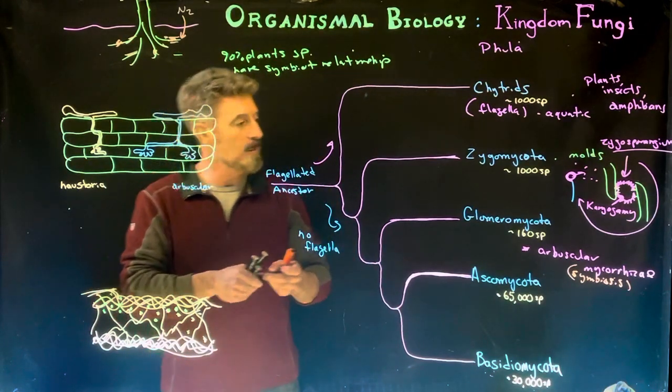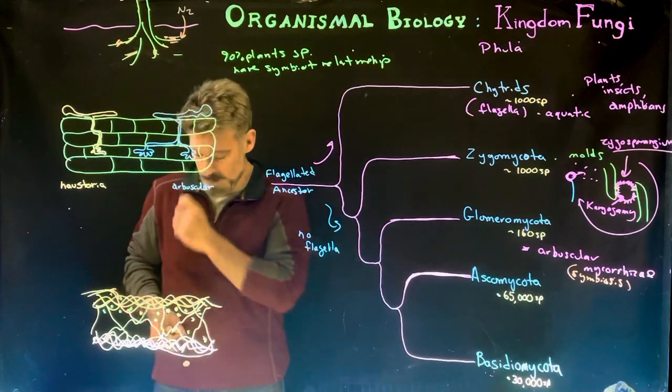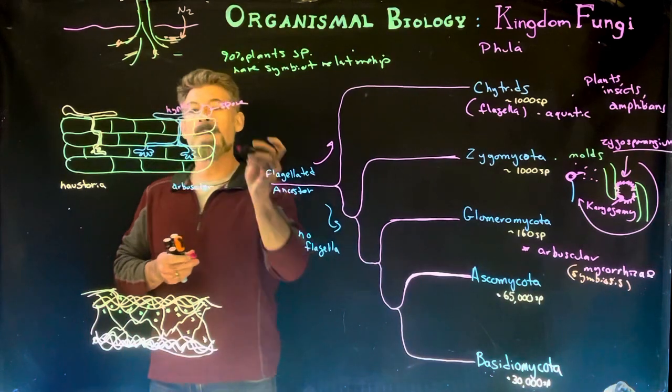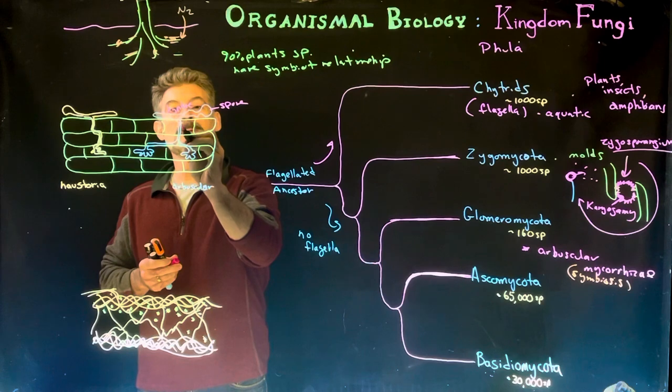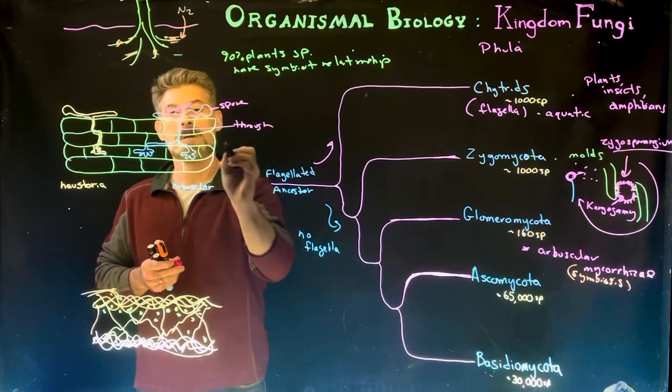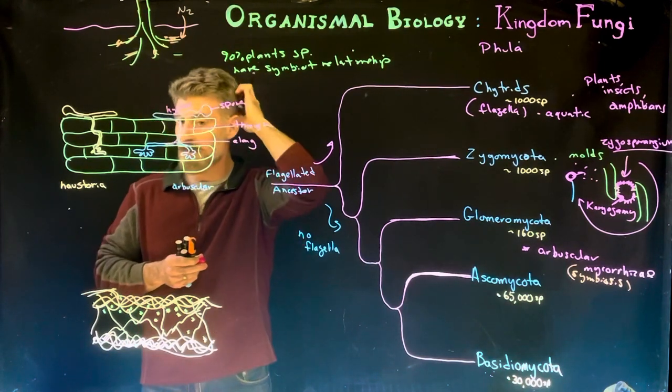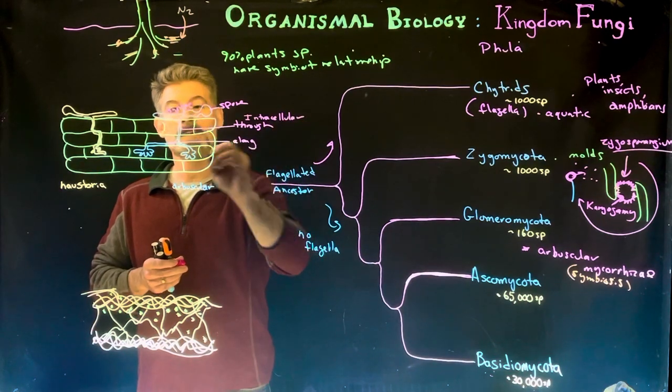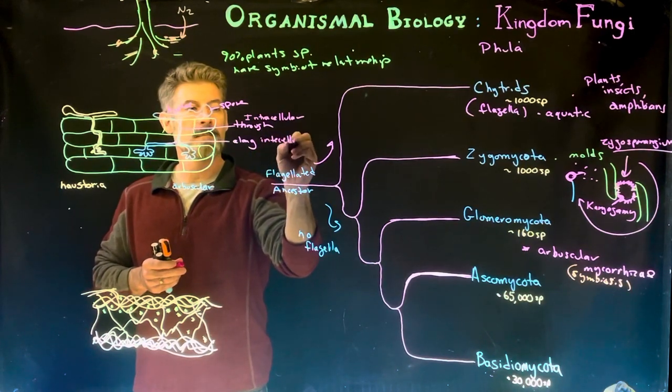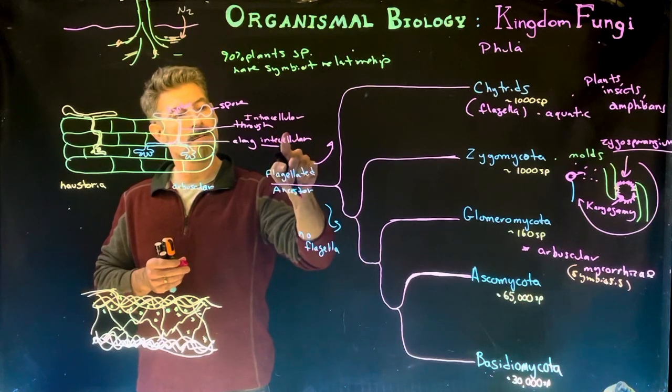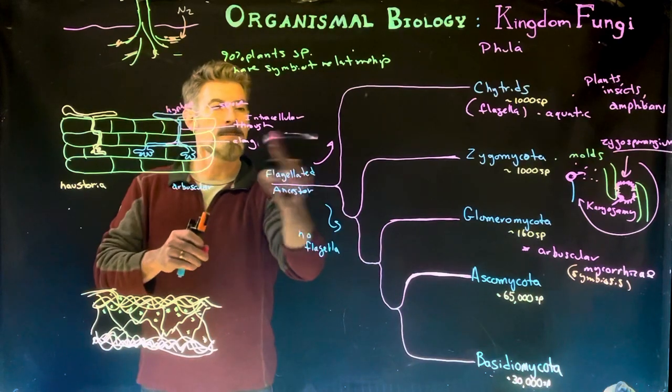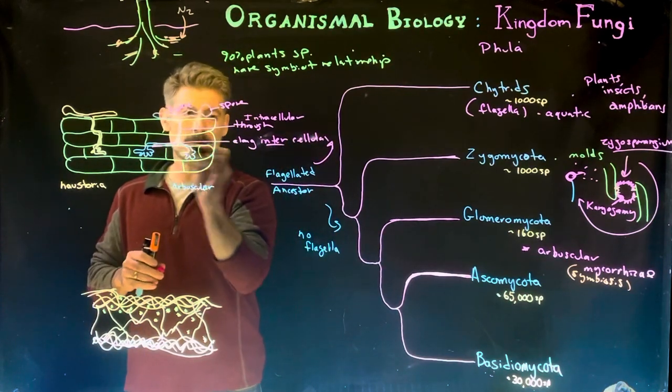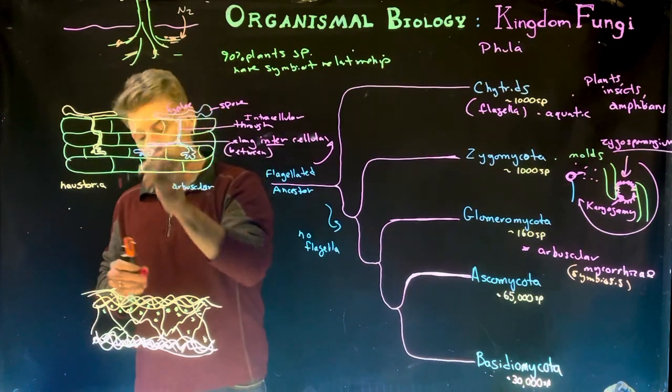And how this works is that, I use this term arbuscular, which means a branching structure. So what you have are, this is a hyphae here produced from a spore. And what will happen is that the hyphae will then branch sometimes directly through, or in this particular case, along. So some go intracellular, and along means in between the cells, which is intercellular. They're going along the borders between the cells. And so hyphae are going to extend into the plant root in between the cells of the plant.